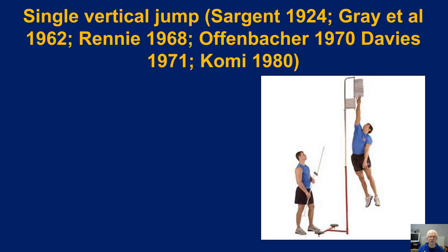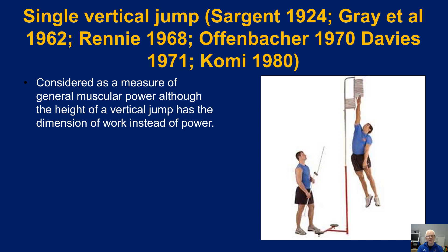We're going to start with the classic test in this domain, which is a single standing vertical jump. Originally that was proposed by Sargent back in 1924, and then there were reiterations in 1962, Rennie in 1968, Asmussen and Bonde-Petersen in 1970, and then Davison and Comey. It hasn't really changed considerably from that original idea. The participant does a single maximal vertical jump, and what you are measuring is the displacement of the center of mass — the proxy indicator of power is the height that the participant jumps.